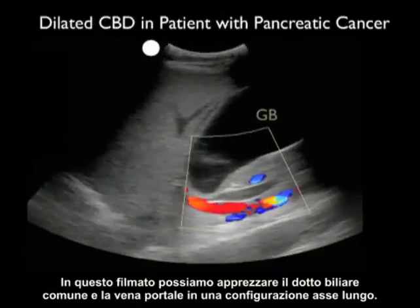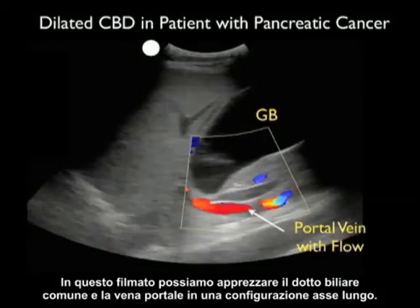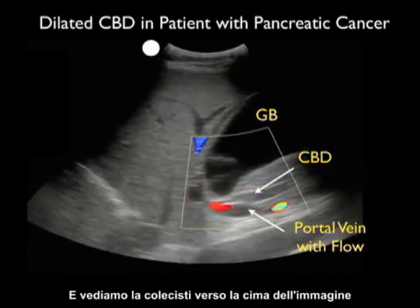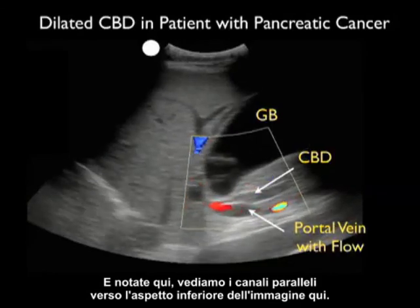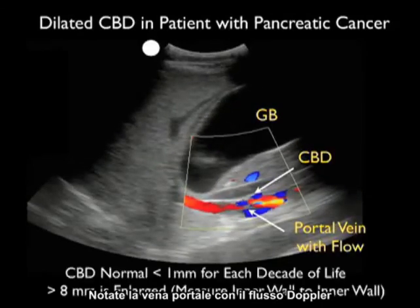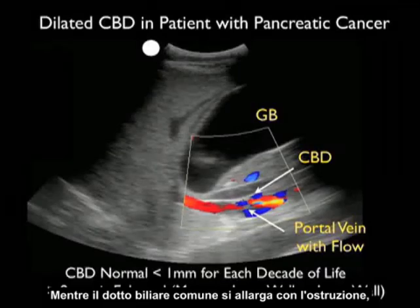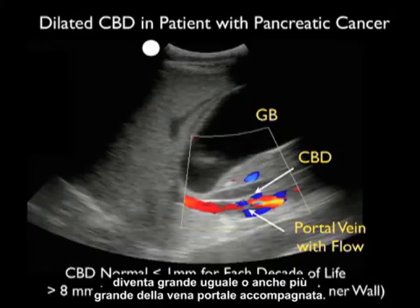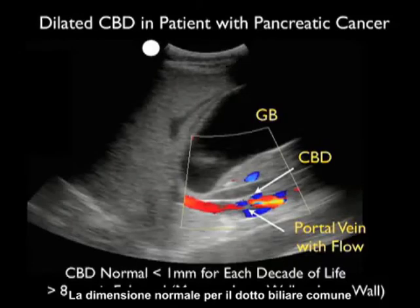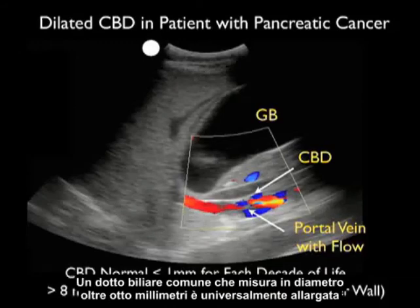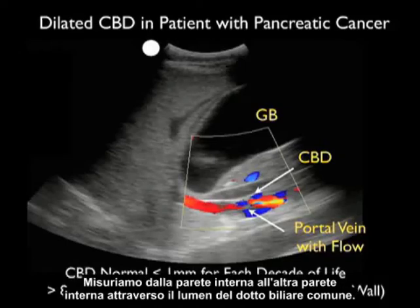In this video clip, we can appreciate the common bile duct and portal vein in more of a long axis configuration. The probe marker is over towards the patient's right shoulder. We see the gallbladder towards the top of the image, and two parallel channels towards the bottom: the portal vein with Doppler flow, and on top of it the common bile duct. As the common bile duct enlarges with obstruction, it will become as large or larger than the accompanying portal vein. Normal dimensions for the common bile duct are no larger than one millimeter per decade of the patient's life, and a diameter greater than eight millimeters is universally enlarged. We measure from inner wall to inner wall across the lumen of the common bile duct.